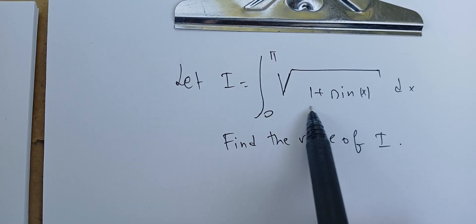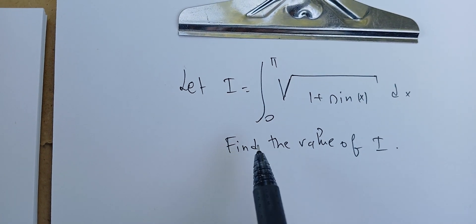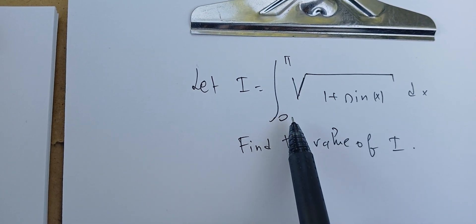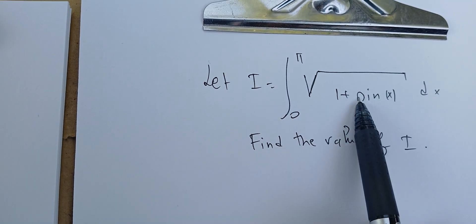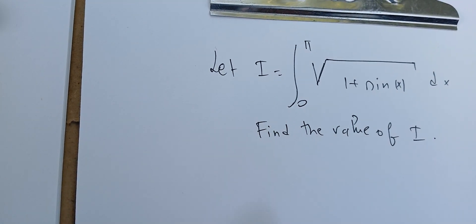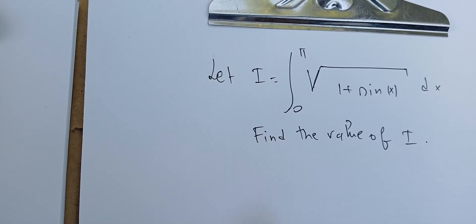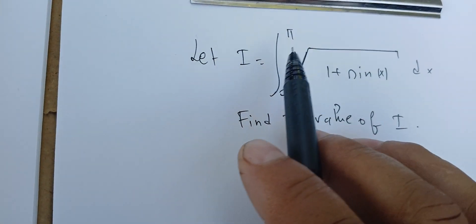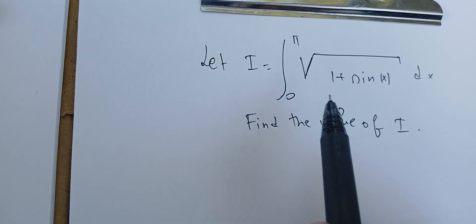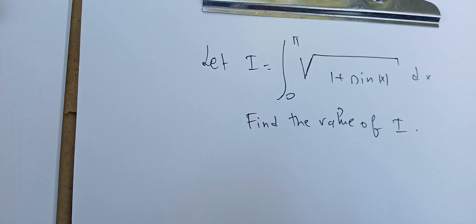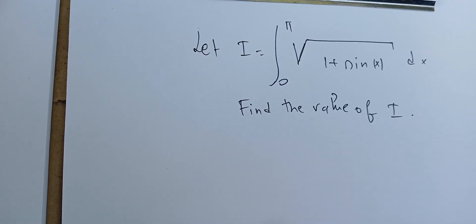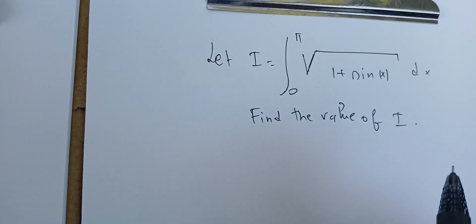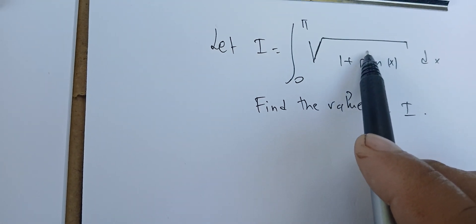In this question we're going to solve the following integral — we're looking for the value of the integral between 0 and pi of the square root of 1 plus sine of x dx. There are many ways to solve this problem, but there is an easy way that is going to be based on some symmetry and a change of variable that we can do to bring this to an easy function we can compute.